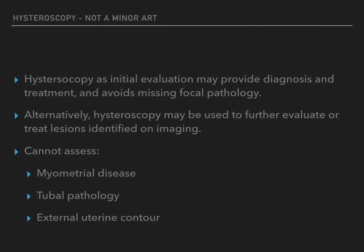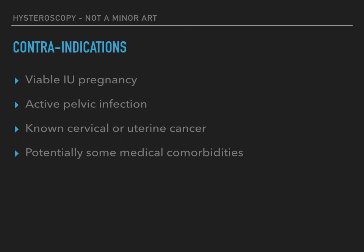Therefore, hysteroscopy is not sufficient for evaluation of these anatomic structures during an infertility evaluation, and additional procedures like laparoscopy or sonography are necessary. The contraindications to hysteroscopy include a viable intrauterine pregnancy, an active pelvic infection — including genital herpes infection — and known cervical or uterine cancer. It should be noted that while hysteroscopy should not be performed in a patient with a viable intrauterine pregnancy, postpartum or post-abortal hysteroscopy is sometimes useful for evaluation and treatment of retained products of conception. Excessive uterine bleeding may limit visualization during hysteroscopy, but it is not a contraindication.